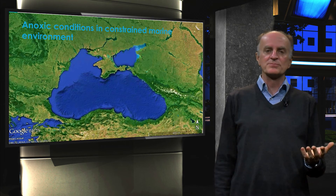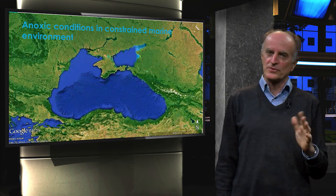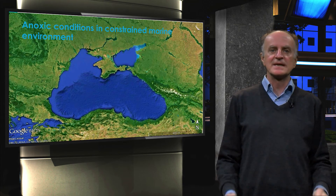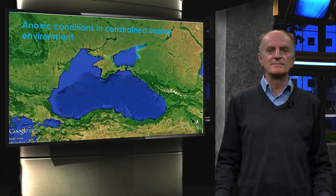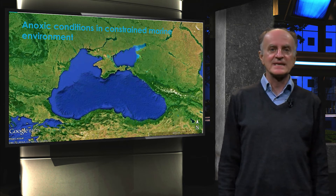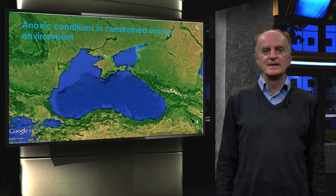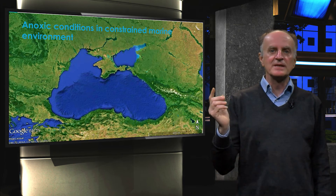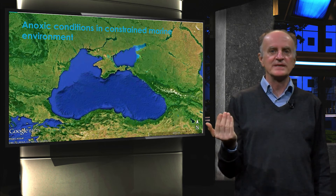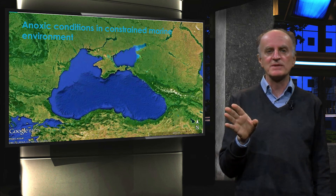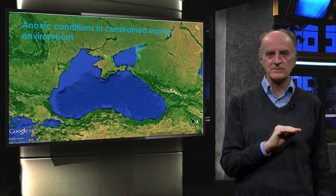Anoxic conditions are also present, though not common, in the marine environment. An important example is that of isolated marine basins. The most famous example is the Black Sea, which is a deep basin surrounded from nearly all sides by continental masses and with only a narrow and shallow connection with the Mediterranean Sea along the Bosphorus.